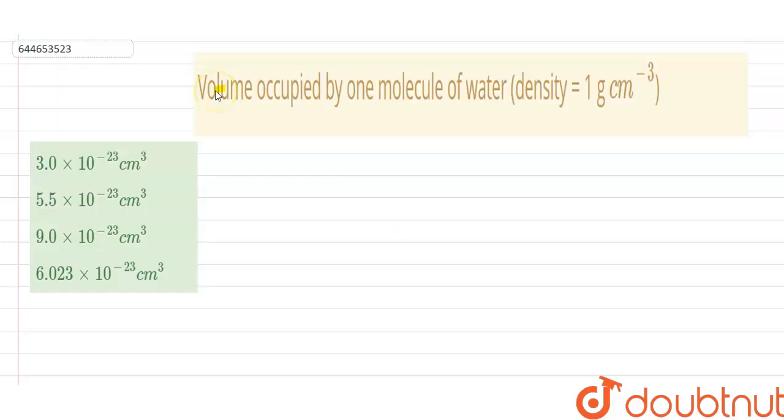So our question is the volume occupied by one molecule of water where the density is given as 1 gram per centimeter cube. We have given the density of the water as 1 gram per centimeter cube.